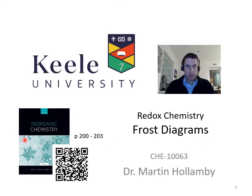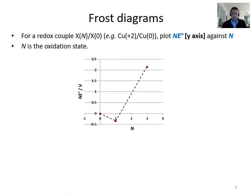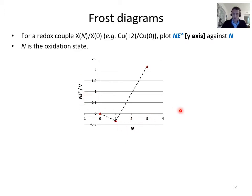We have reading from inorganic chemistry, pages 200 to 203, and this QR code takes you to page 200. A frost diagram plots y versus x, where y is the oxidation state multiplied by the standard reduction potential of that particular oxidation state back to an oxidation state of zero, and x is simply the oxidation state.